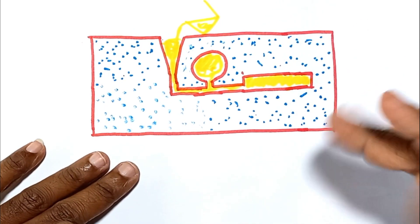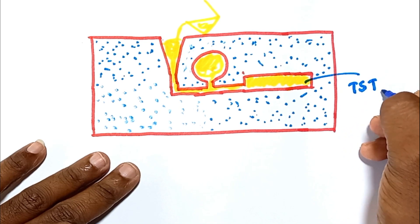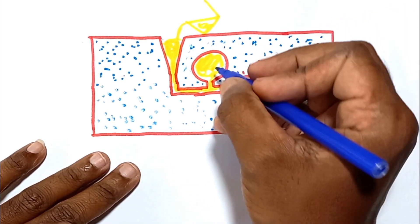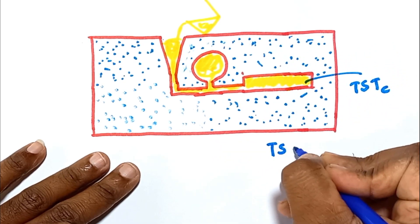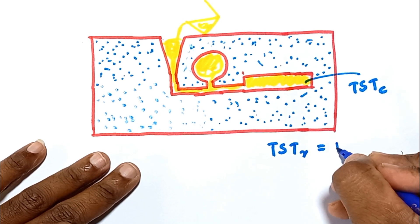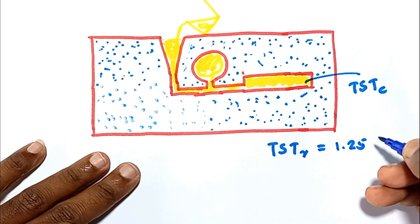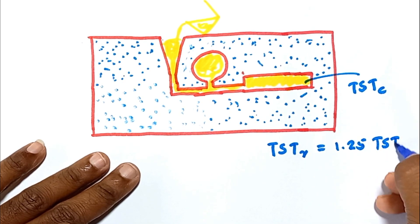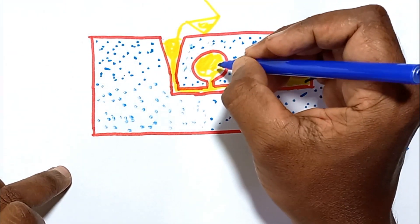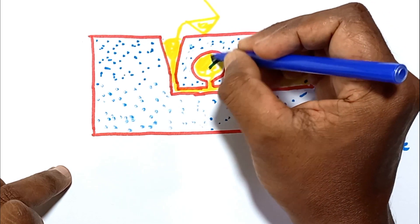The total solidification time of the riser should be 25% greater than that of the casting. That means the total solidification time of the riser equals 1.25 times the total solidification time of the casting. This is the condition we use to design the diameter or radius of the sphere.